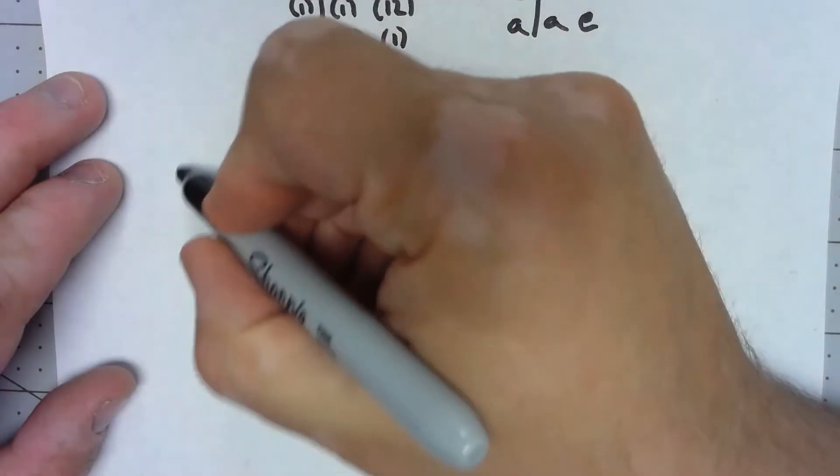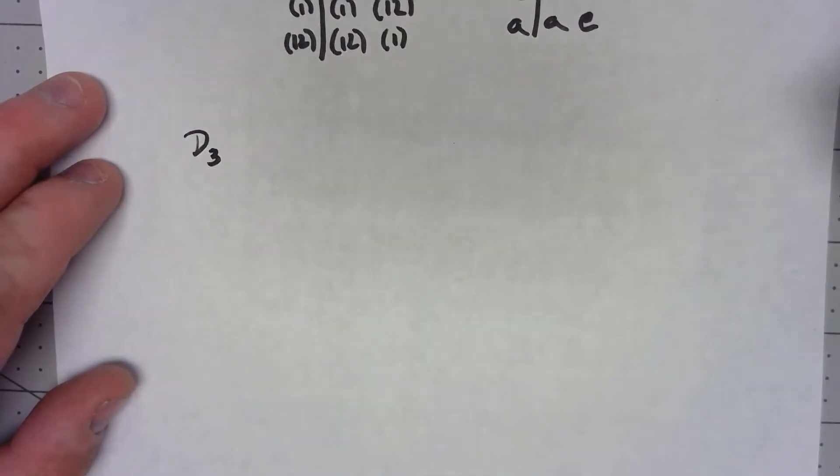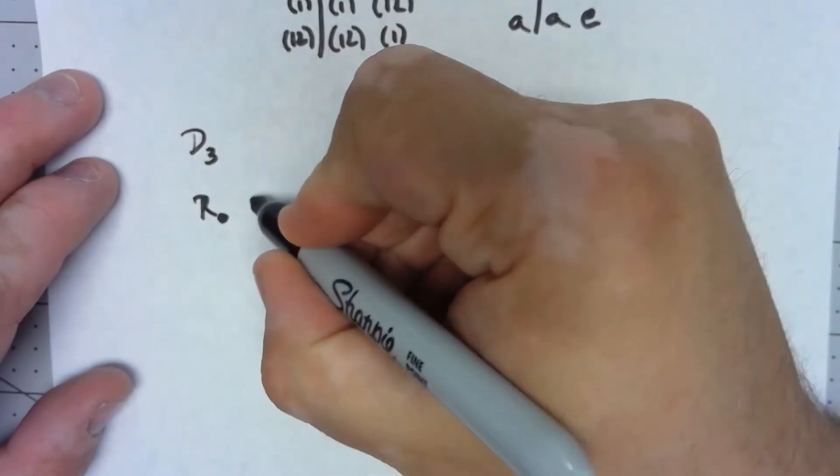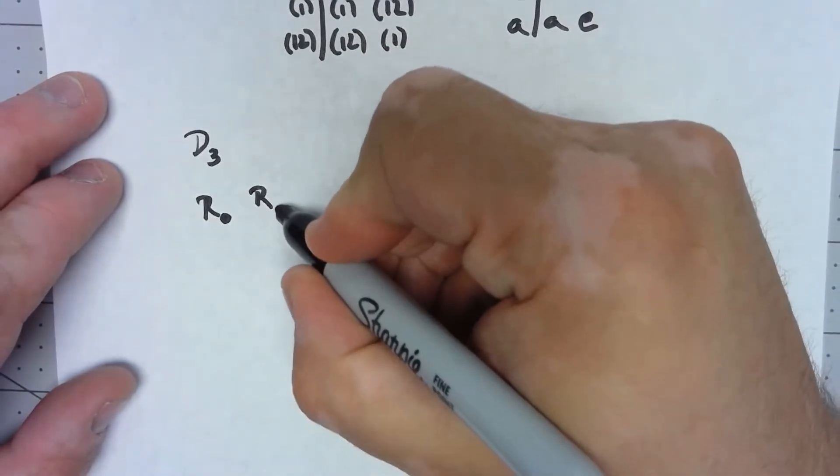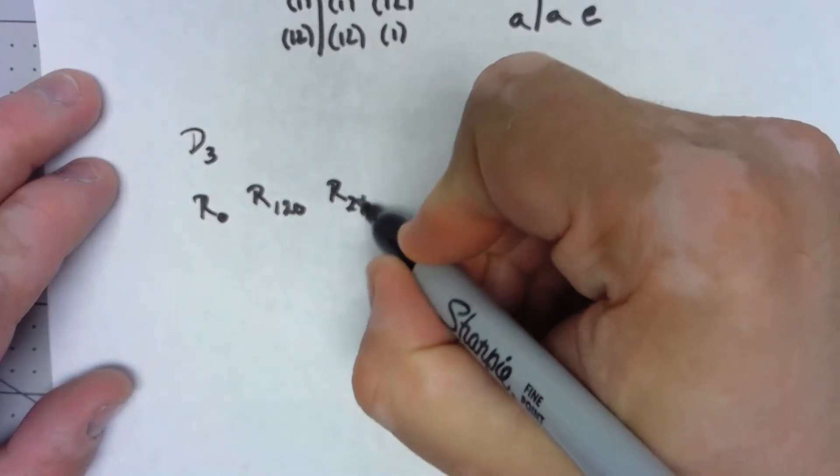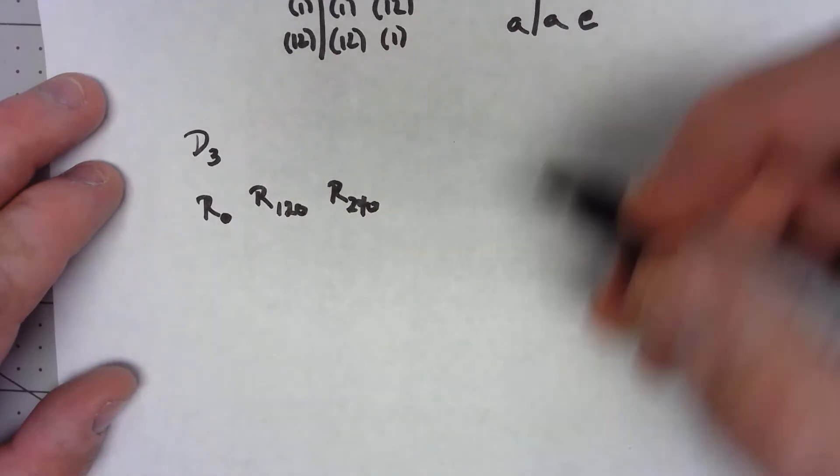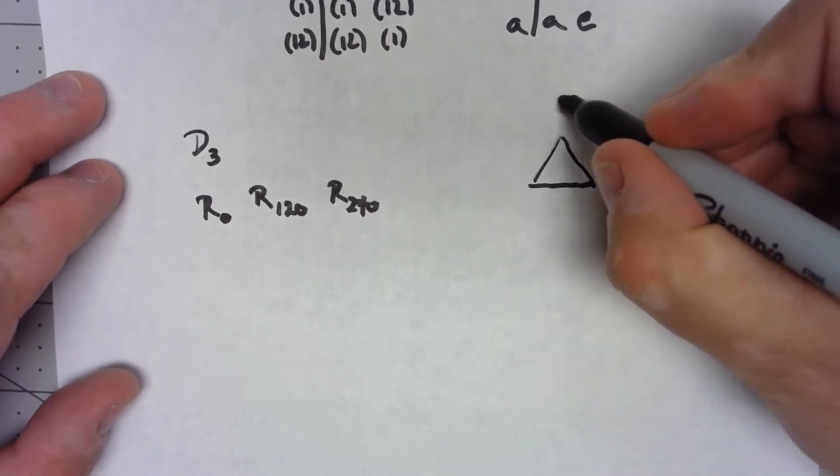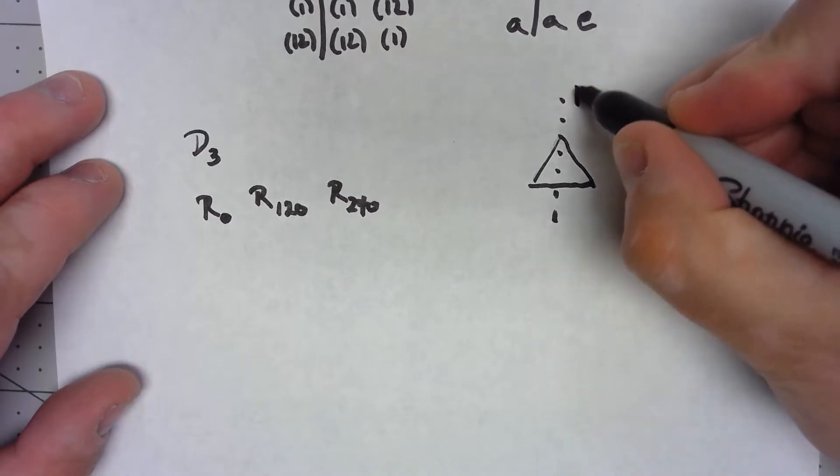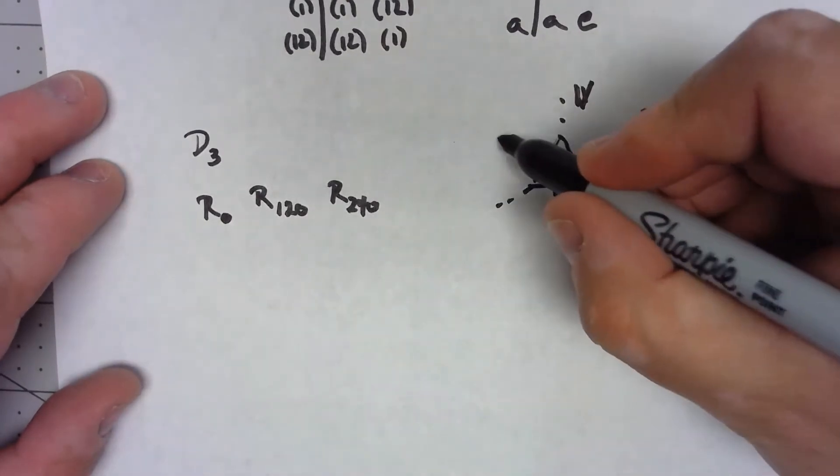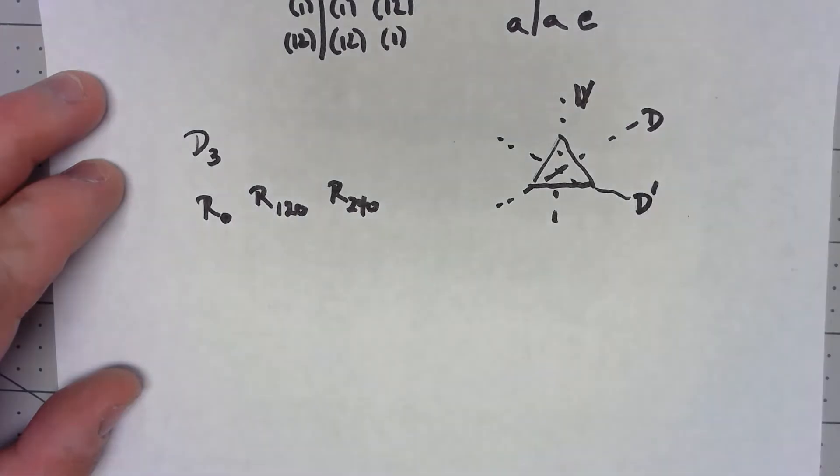But right now, let's take a look at another example that we've already looked at. We had the dihedral group on three elements—that was the symmetries of a triangle. So what we had: we had rotation by 0, rotation by 120, and a rotation by 240. And then we had, if we think about our triangle being like this, we had a vertical reflection, we had a diagonal reflection, and we had an off-diagonal reflection.